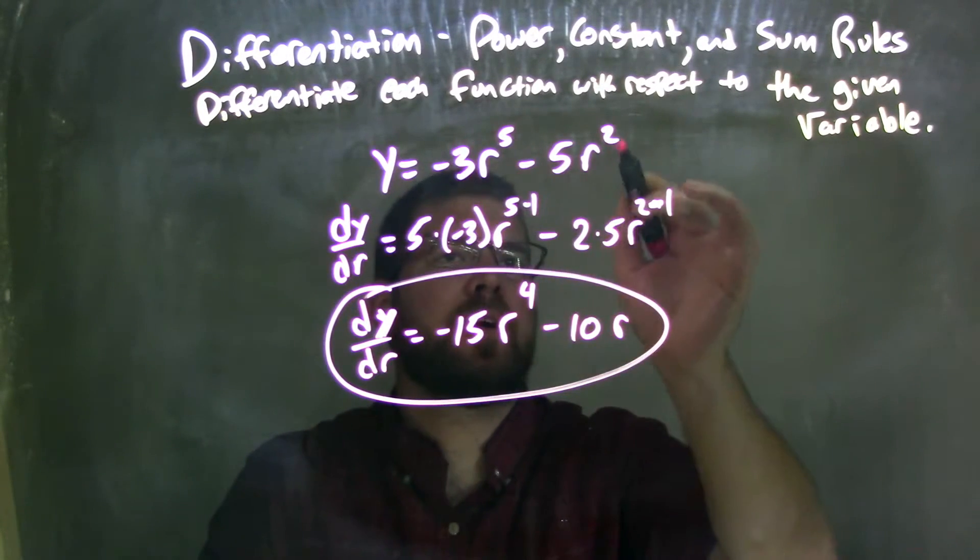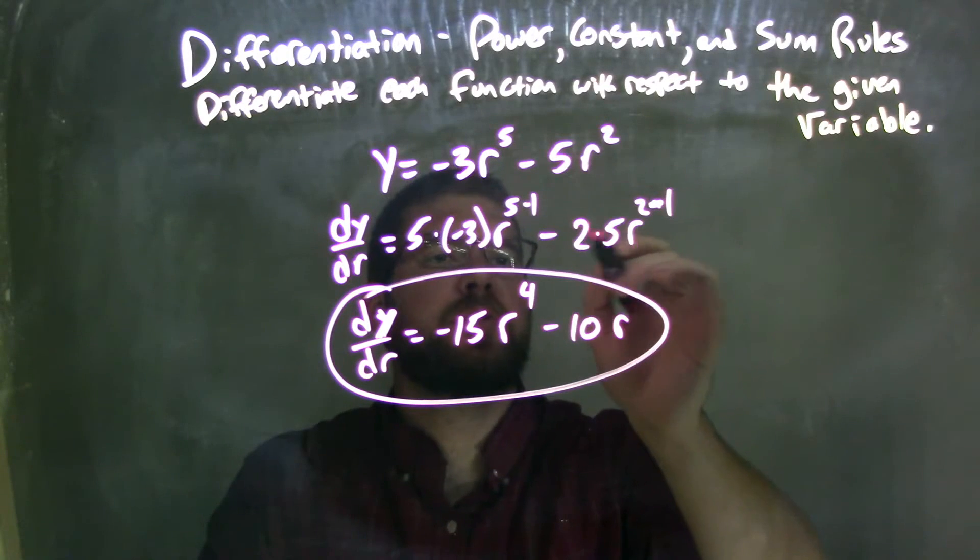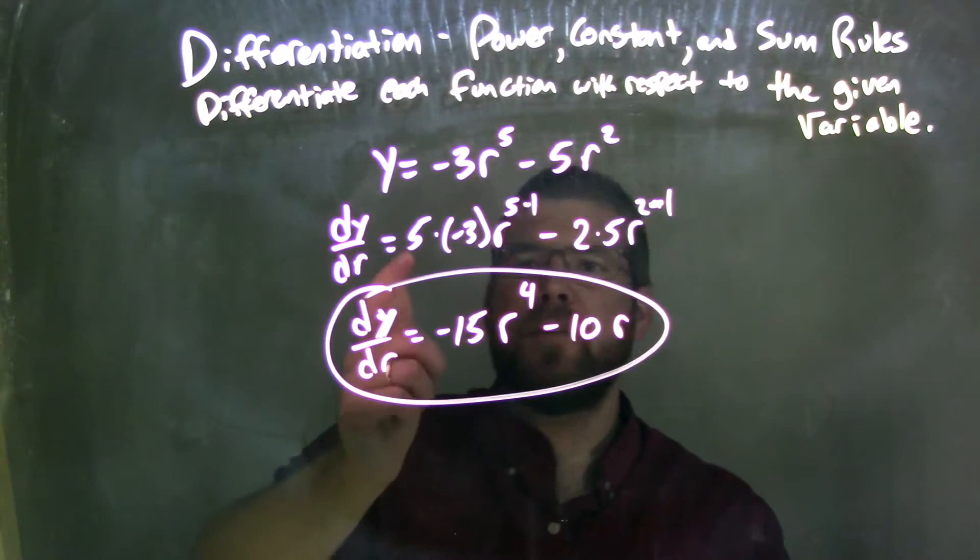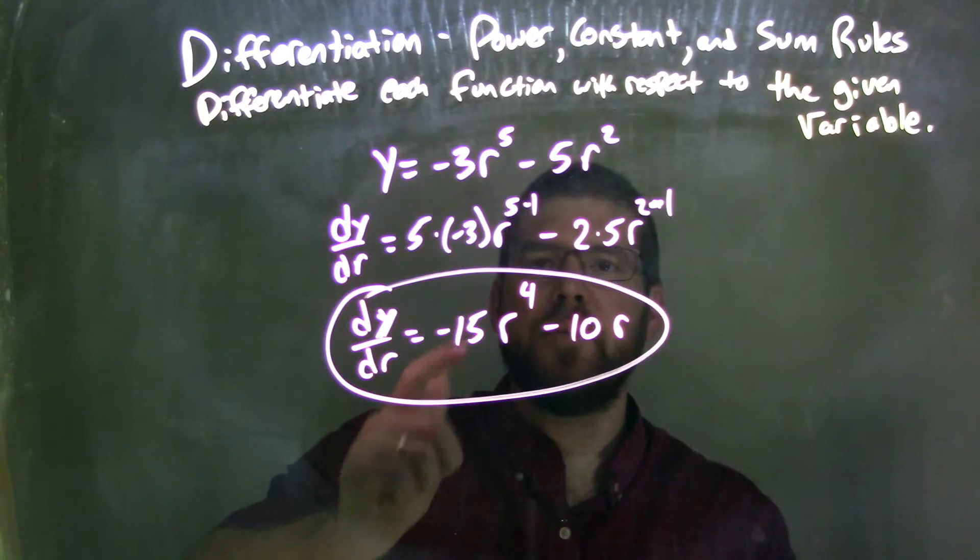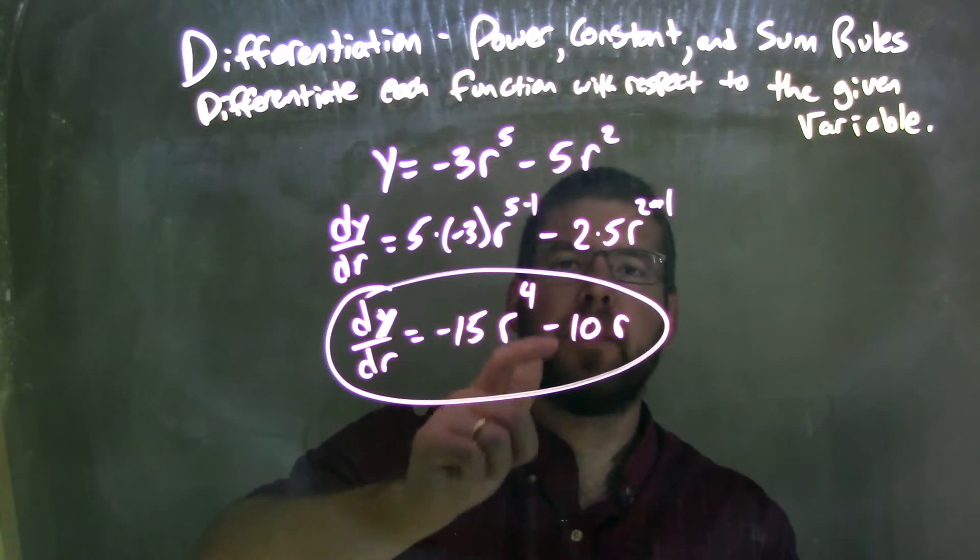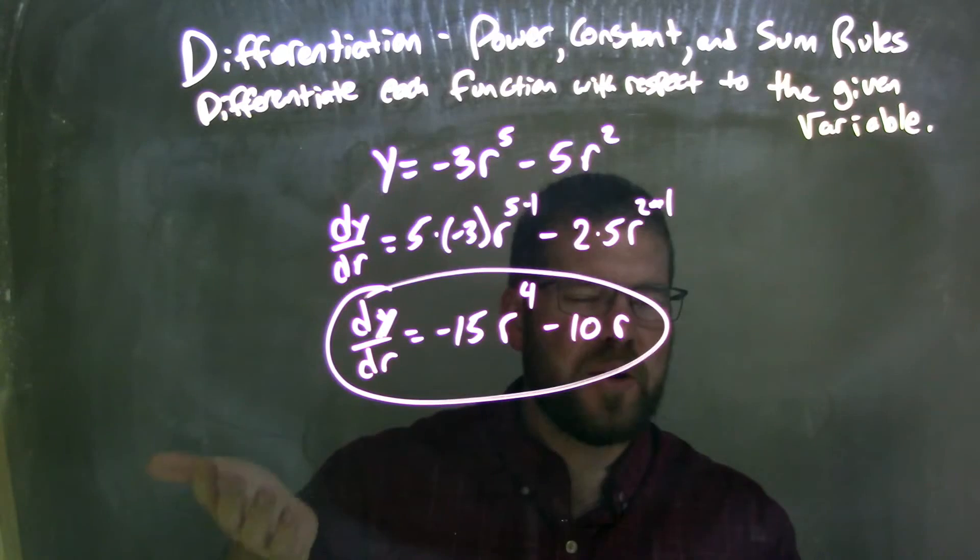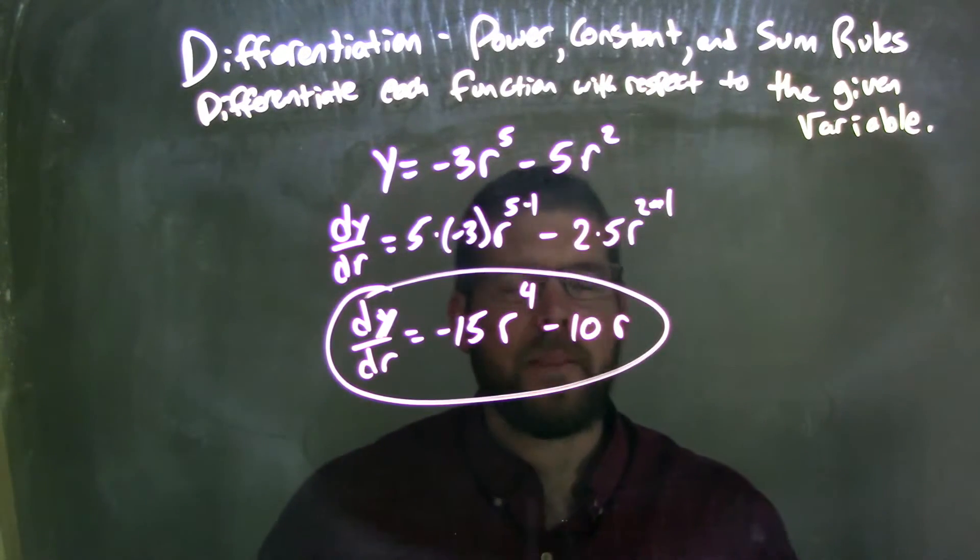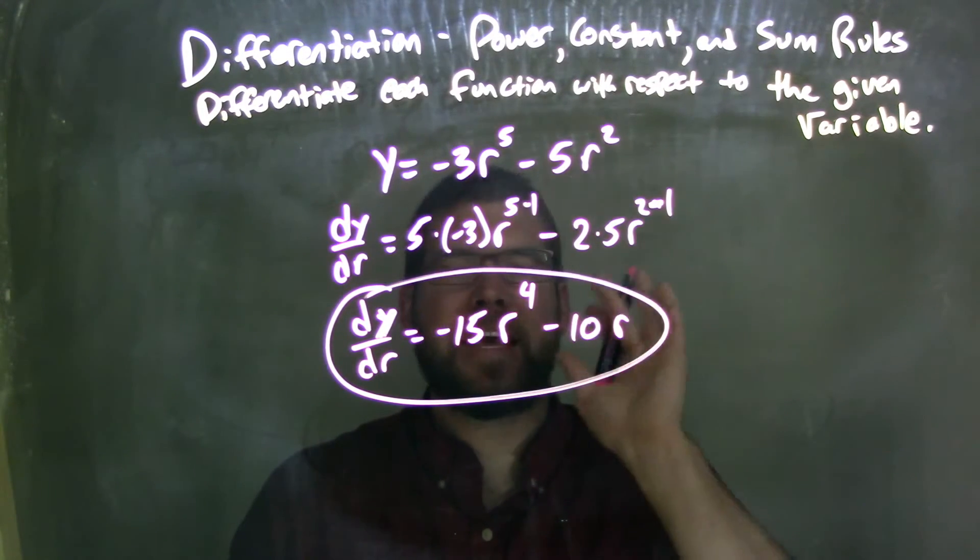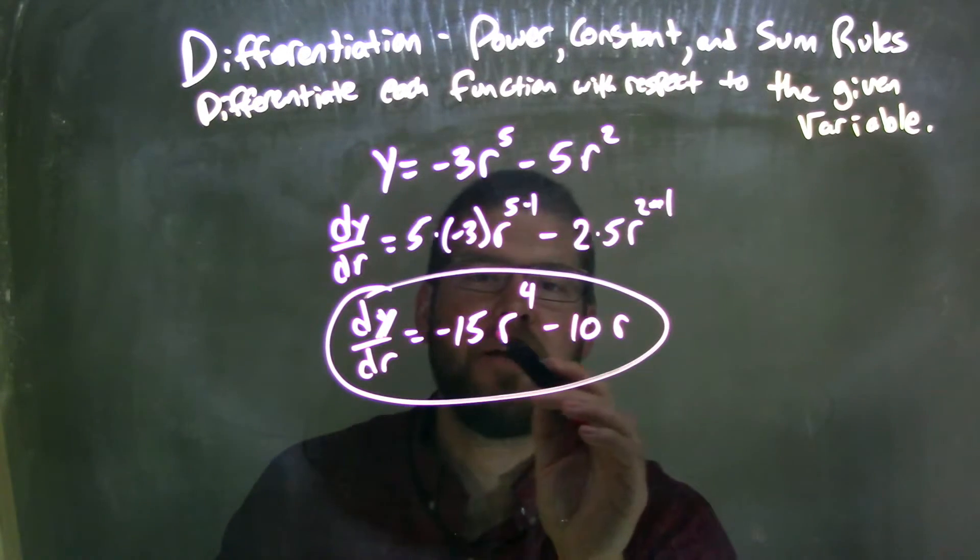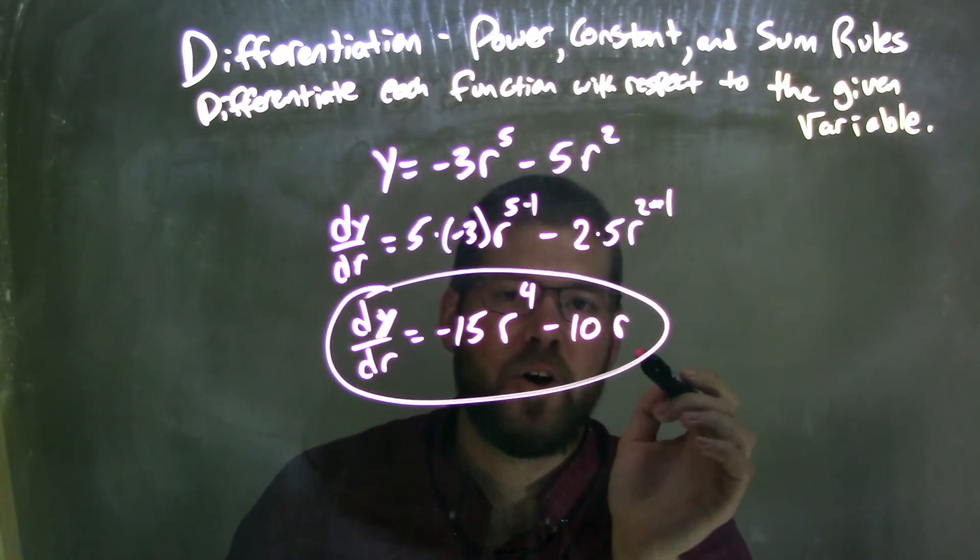Do the same thing with the second part. 2 comes out up front, 2 times 5r to the 2 minus 1 power. Now we simplify. 5 times negative 3 is negative 15, and 5 minus 1 is 4, so we have negative 15r to the fourth power, minus 2 times 5, which is 10, and 2 minus 1 is just 1. Don't need to leave it to the first power, so we have minus 10r, giving my final answer: dy dr equals negative 15r to the fourth power minus 10r.